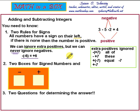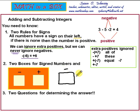The second step: we draw two boxes. Above one box we write a negative, and above the second box we write a positive. Be sure that you put the signs above the boxes — do not put the signs inside the boxes.